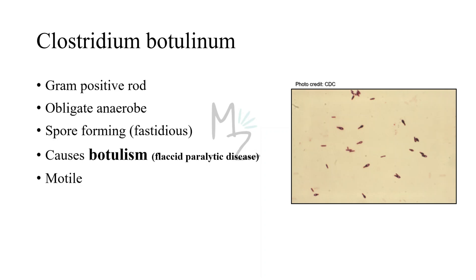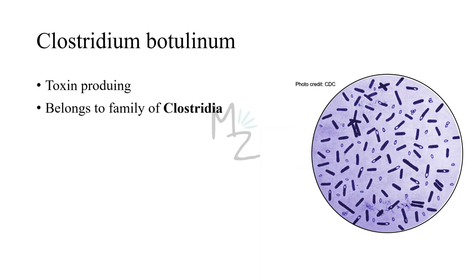This bacterium is responsible for causing botulism, commonly known as flaccid paralytic disease. We'll discuss why it is termed flaccid paralytic rather than simply paralytic in the pathogenesis section. This bacterium is motile and produces the botulinum toxin, which plays a major role in pathogenesis. In the picture, you can clearly see Clostridium botulinum — the circular opacities are the spores, and you can also see the rod and spore together, representing the transitional form between the two.